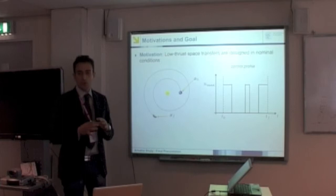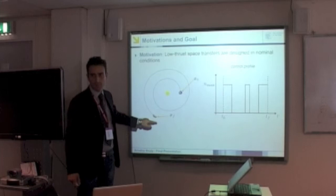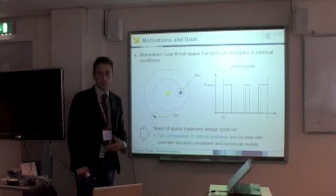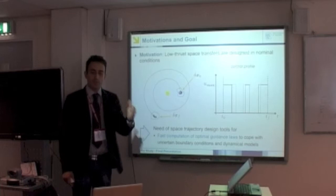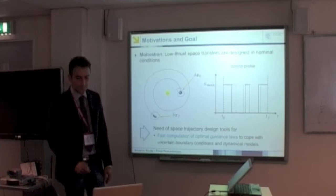Some words about the motivation of this project. Low-thrust space transfers are designed in nominal conditions in general, so we have a nominal initial condition, a nominal final condition, and we design the nominal optimal control to go from X0 to XF. However, real scenarios are affected by uncertainties on boundary conditions or dynamical model parameters, which tend to move the spacecraft away from its nominal path. So we need space trajectory design tools to cope with such uncertainties and to optimally correct the control profile.